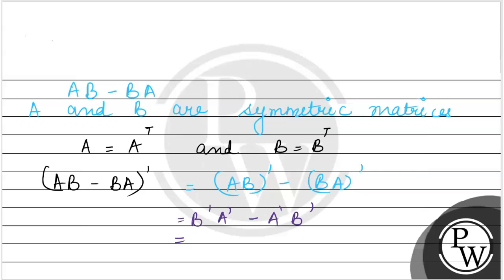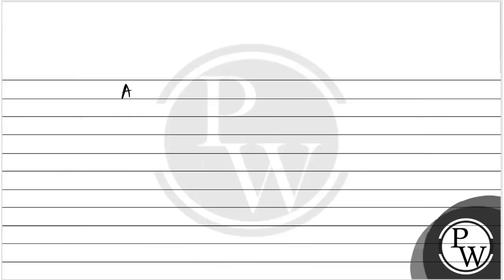Taking the transpose of AB minus BA, we get AB minus BA transpose is equal to negative of AB minus BA. That means AB minus BA satisfies the condition of a skew symmetric matrix, so AB minus BA is a skew symmetric matrix.